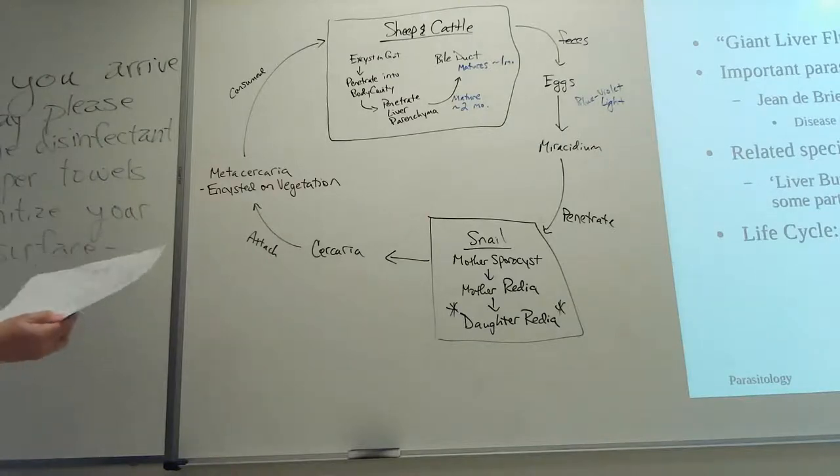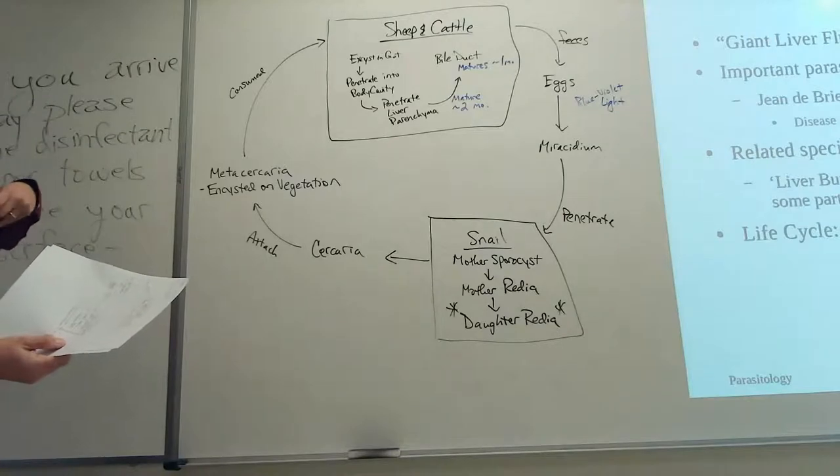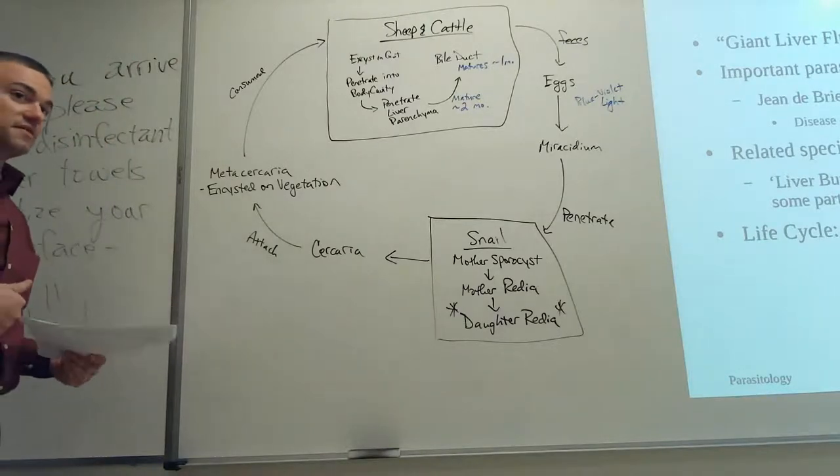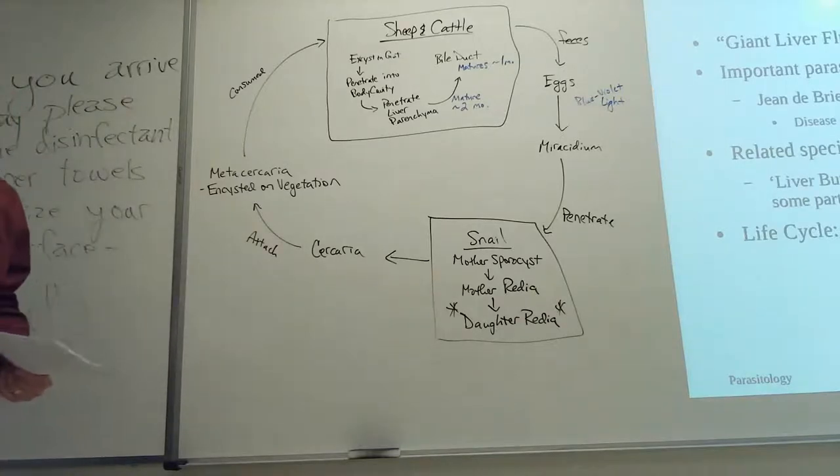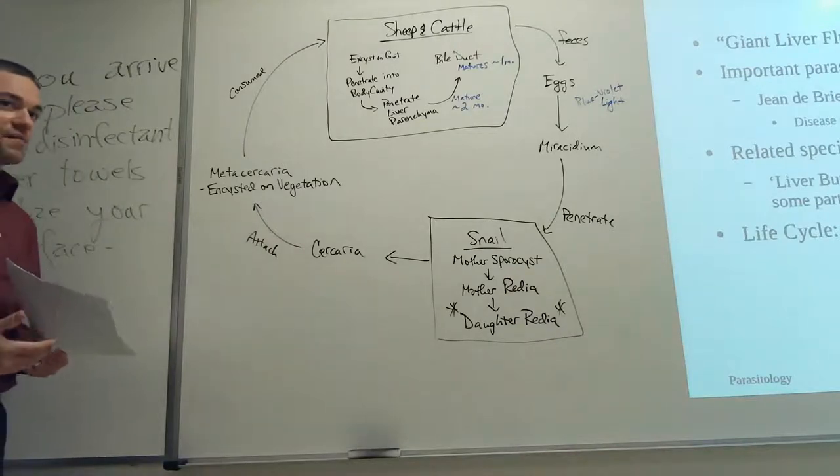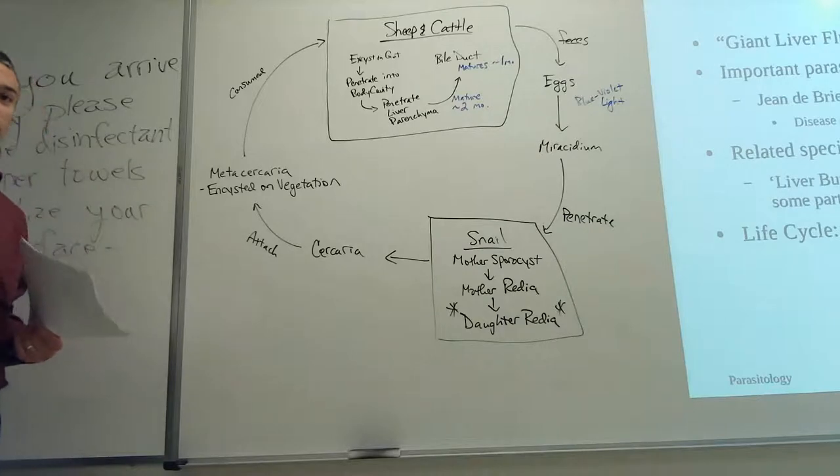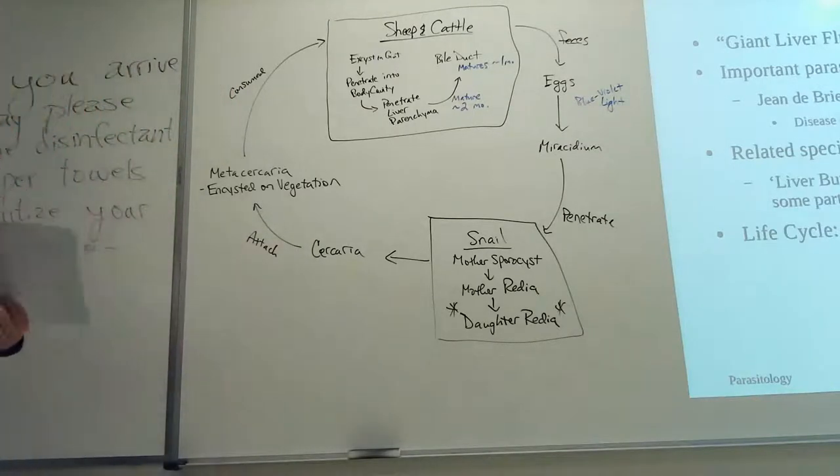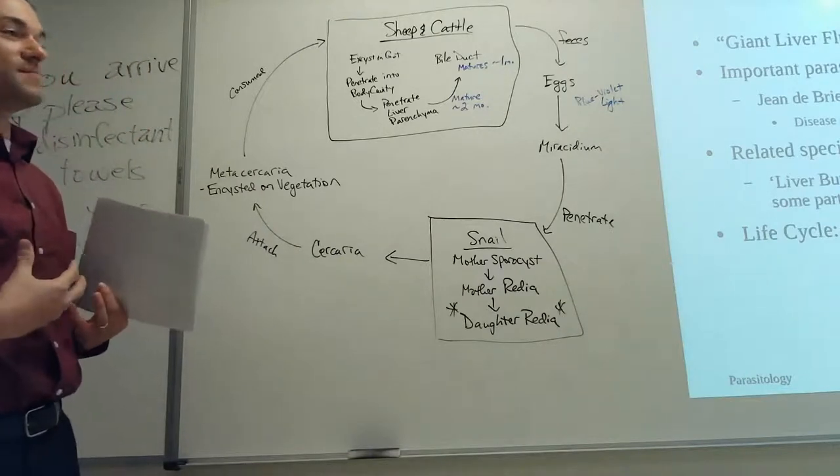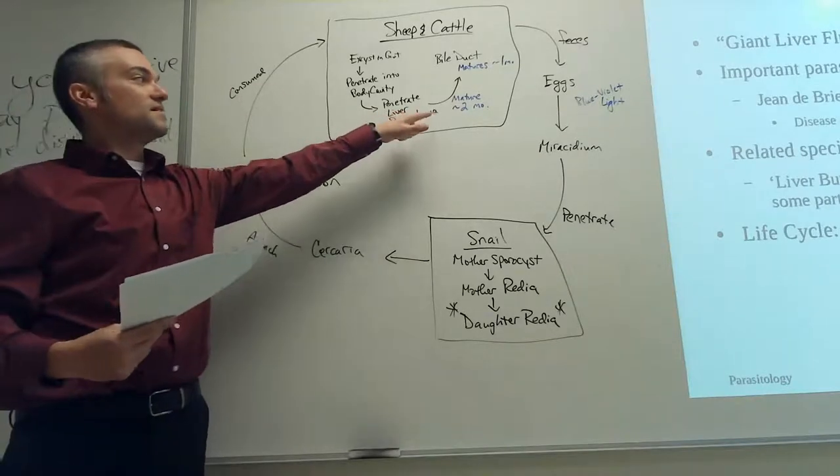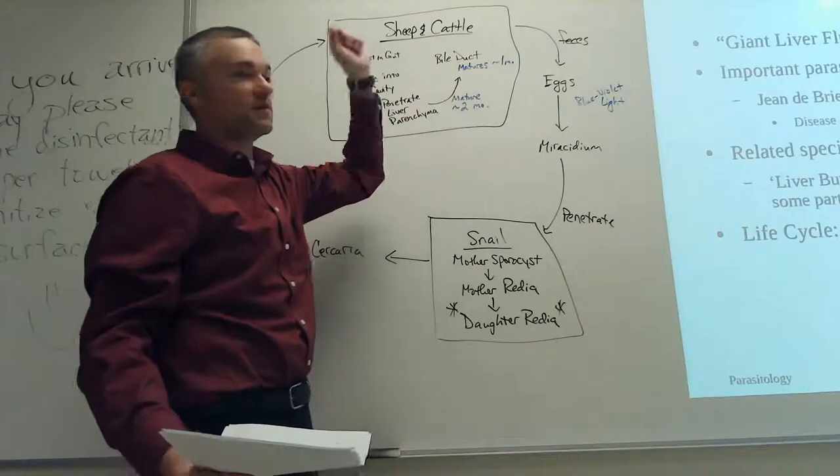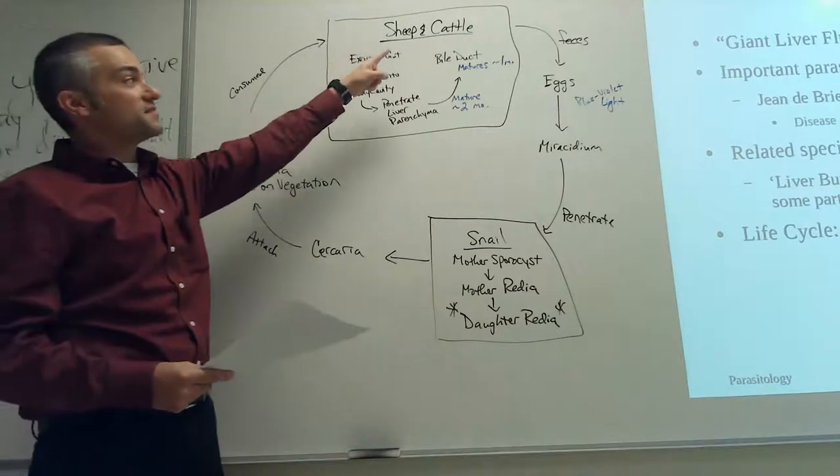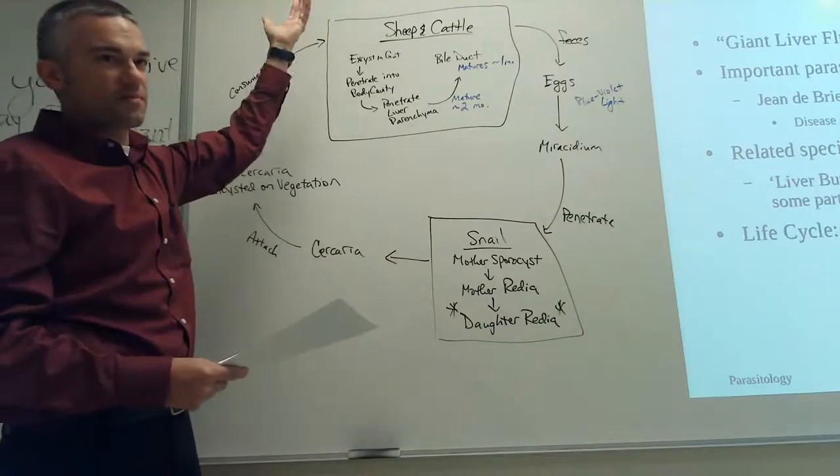It's going to excyst in the gut. So, emerges from our cercarial cyst. It then penetrates the gut wall and the gut epithelial cells. So, that gets inside the body cavity. Inside the body cavity then, it will migrate, get to the liver and penetrate our liver parenchyma. All right, so, we left the gut, penetrate into the liver parenchyma, where it's going to mature for about two months. And then, once it starts reaching maturity, it will now migrate to the bile duct. And in about one month more, it's mature and starts to release eggs.